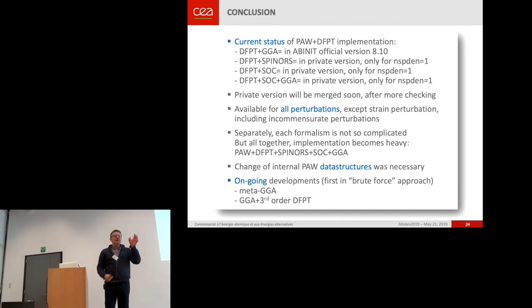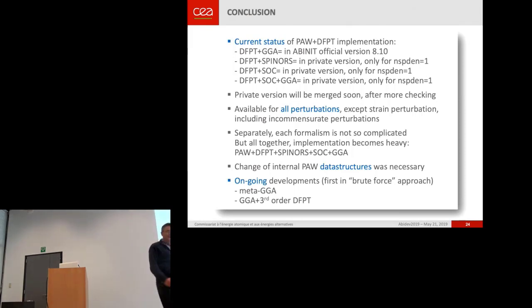And there is an additional term for strain. And in Marc's implementation in norm-conserving pseudo-potential, the nonlinear core correction term has been implemented in real space. And we have implemented it in reciprocal space in PAW, and I need just to change, to adapt this to non-collinear magnetism. That's it.